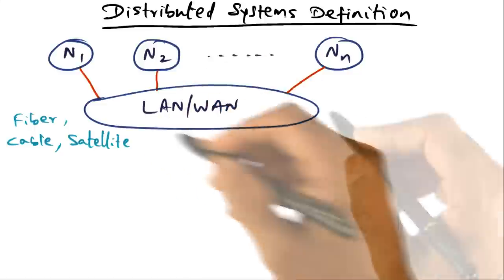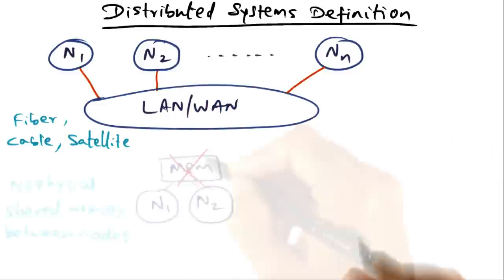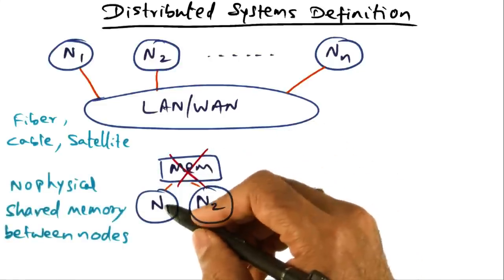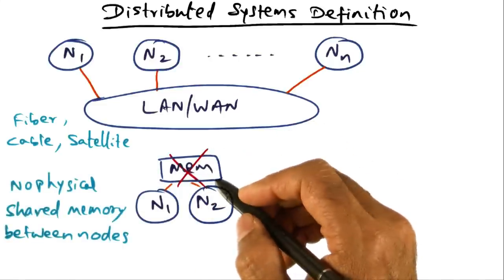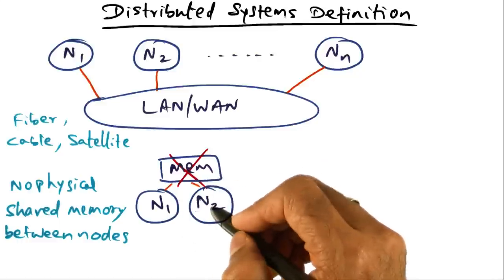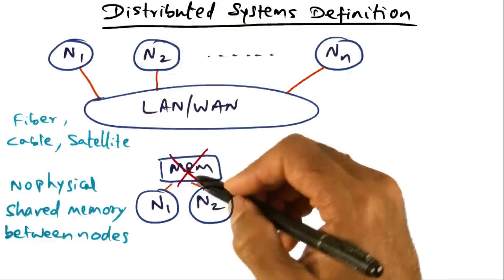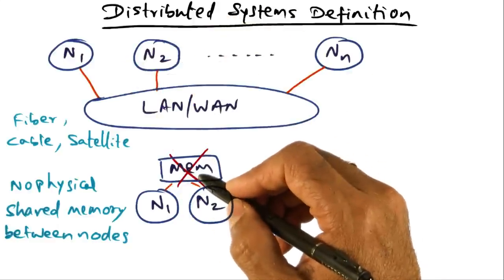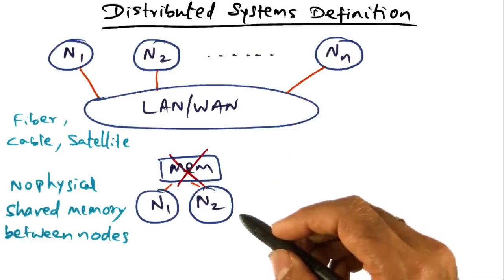That's the picture of what a distributed system is. There is no physical memory that is shared between nodes of the distributed system. The only way nodes can communicate with one another is by sending messages on the local area network. There is no shared memory for communication between the nodes of the distributed system.